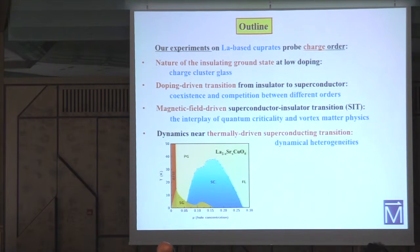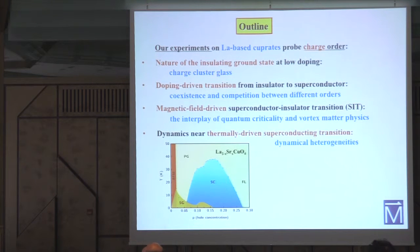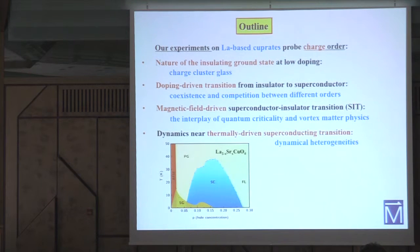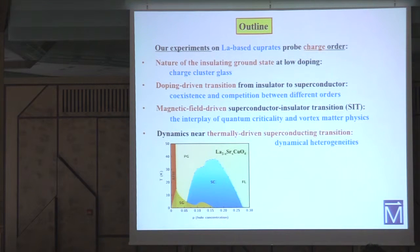Strictly speaking, this is not a transition to an insulating state, but to get the full picture of what is going on in this regime of low doping, it is important to understand the behavior as we vary all the relevant parameters. I will show some very recent unpublished evidence that as we approach the transition from above by lowering the temperature, we see the emergence of dynamical heterogeneities near the transition.